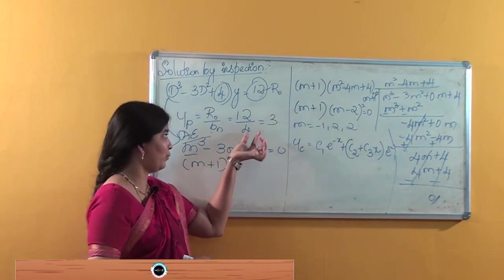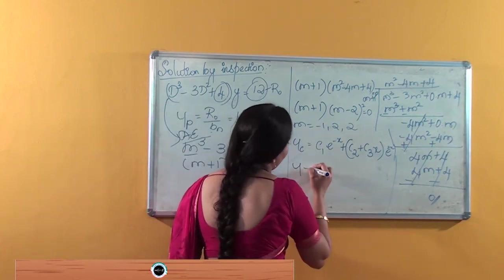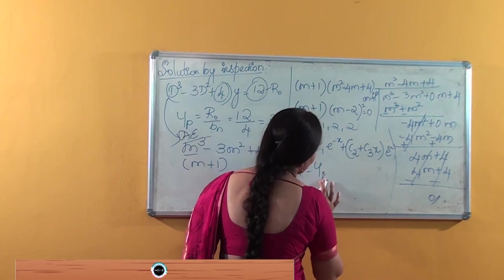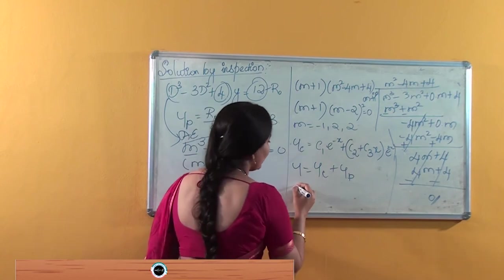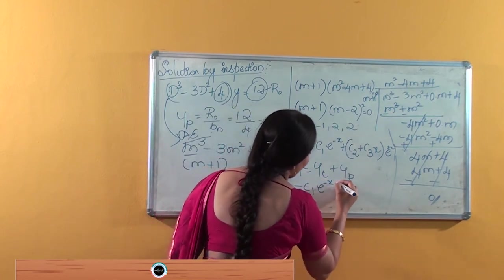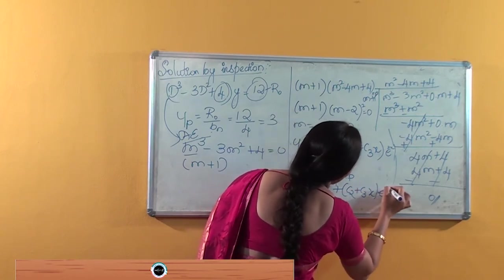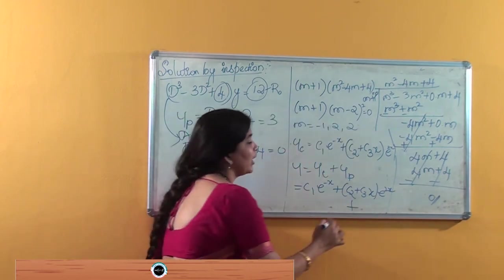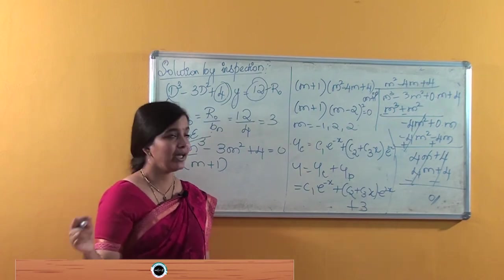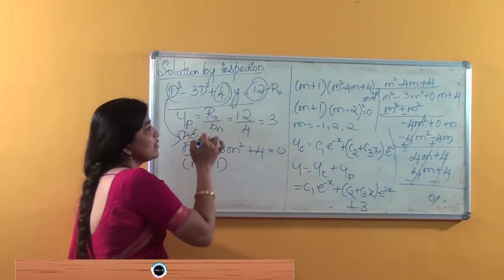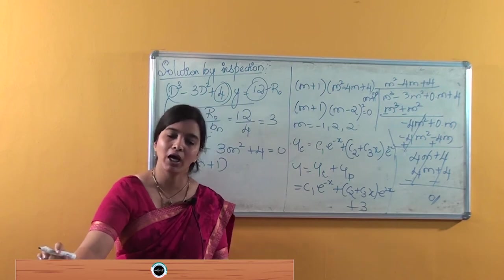The complementary solution is yc = c1·e^(-x) + (c2 + c3·x)·e^(2x), and the particular solution is 3. The general solution is the sum of the complementary and particular solutions. In this way, we find the solution by inspection when the right-hand side equals a constant r-naught.